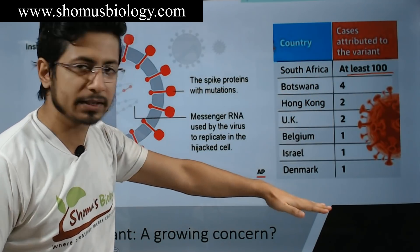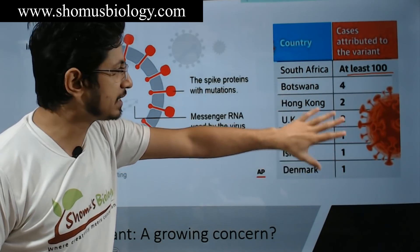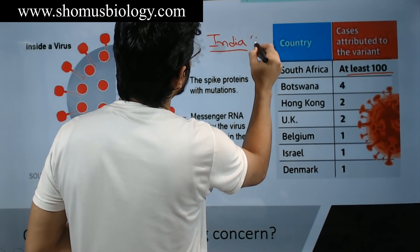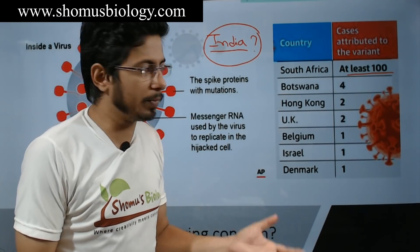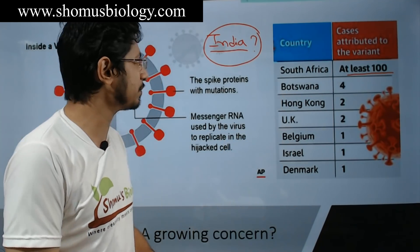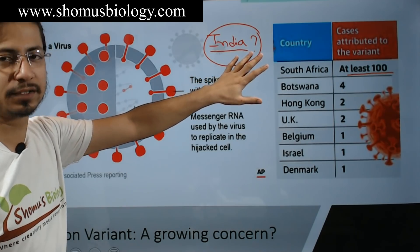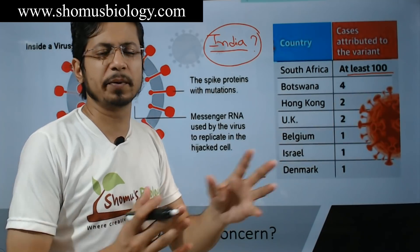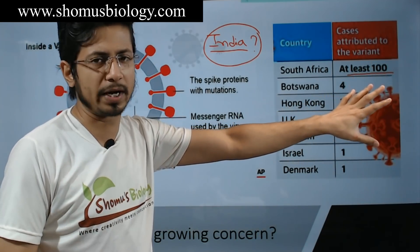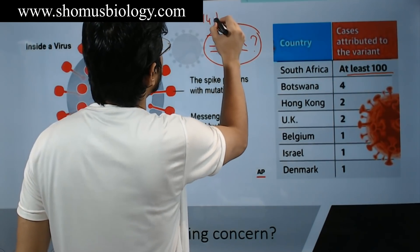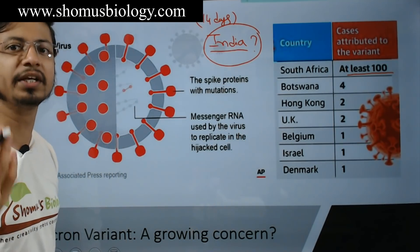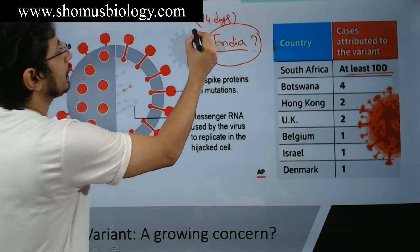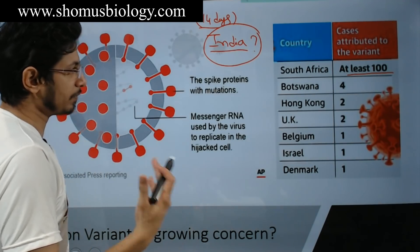Apart from South Africa, there are different places in the world like Hong Kong, UK, Belgium, Israel, and Denmark where this virus has already been transferred. We don't know whether it's in India yet, but there is a high chance it has already arrived because at the very early stages, when a virus spreads to only 2 to 5 people, it's very difficult to track. We can only tell after 14 days. I'm recording this video on 30th November 2021, so from this date, 14 days from now, we can know more about whether this virus reached India.